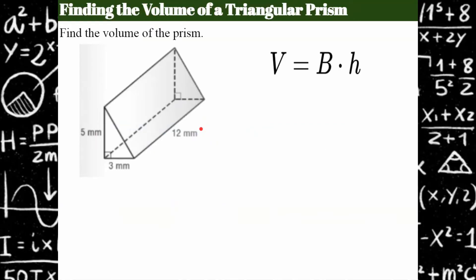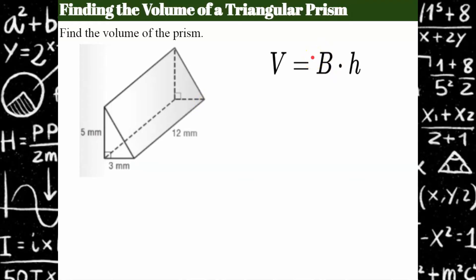Now let's look at a different type of prism. This is a triangular prism and it's actually sitting on its side. It's a triangular prism because the two bases that are parallel to each other are triangular and they're connected by these sides, and each one of these faces has a height of 12.